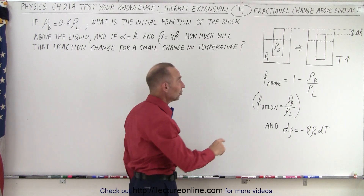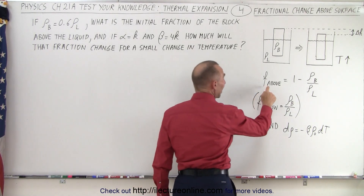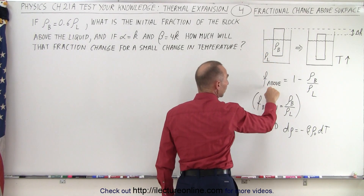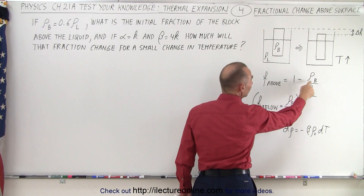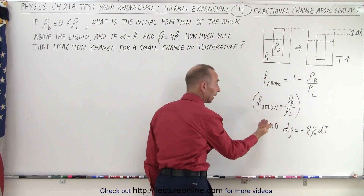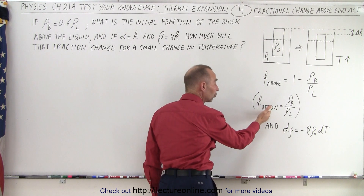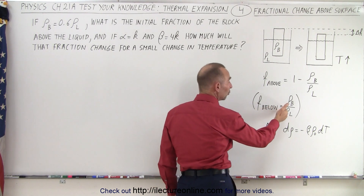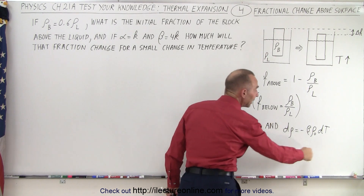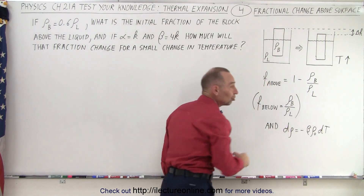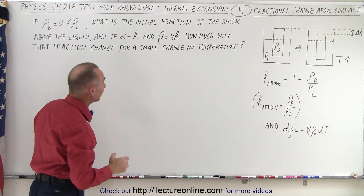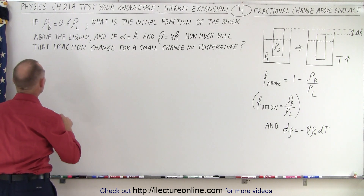Using the equation that the fraction of the height of the block above the surface equals 1 minus the density of the block divided by the density of the liquid — because the fraction below the surface is the ratio of the density of the block to the density of the liquid — and knowing the relationship between the change in density and the change in temperature, let's now read the question.